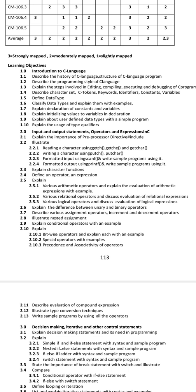Next, classify data types and explain them with examples. Data types — classify and explain them with examples. These are three important essay questions from unit 1: structure of C program, steps involved in editing/compiling/executing/debugging, and classify data types and explain them with examples.